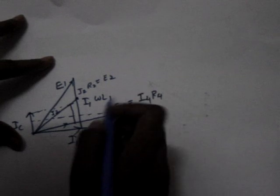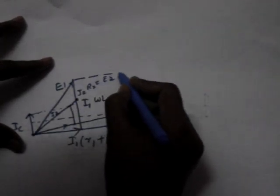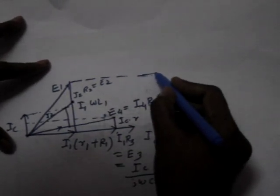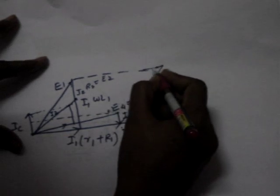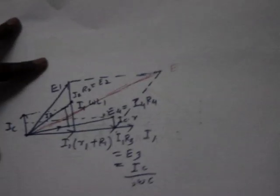So we have E1 plus E3. E4 plus E2 is equal to E.